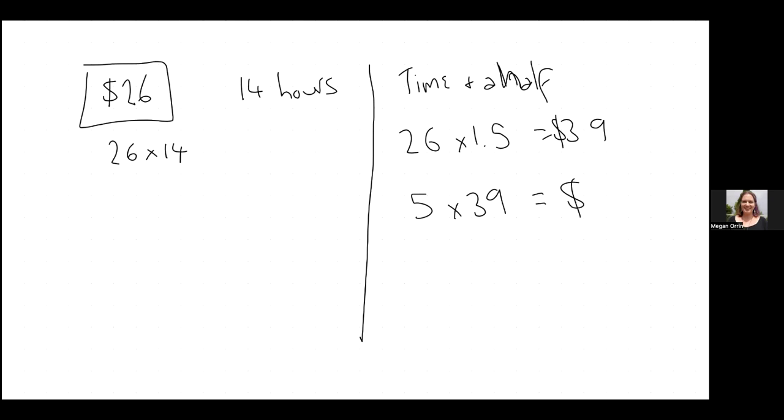Five times 39. 195 bucks. That would be for five hours' work. That's pretty good, which is why I used to do it. So this is a phrase that you need to notice. If you're being paid time and a half, that's what it means.